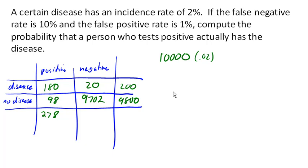So if we wanted to find out the probability that they have the disease given that they test positive, then we have 278 people who tested positive. Of them, 180 have the disease.